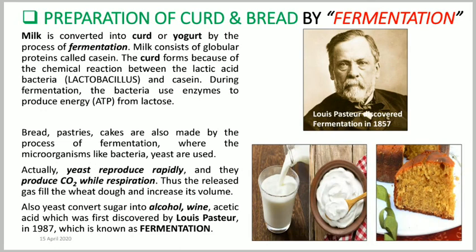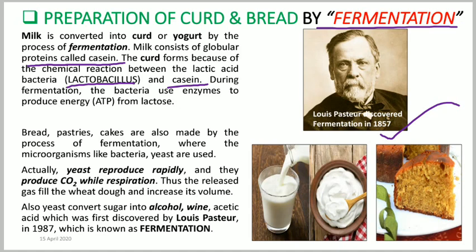How do bacteria help in the preparation of curd and bread? That process is known as fermentation. Louis Pasteur discovered fermentation in 1857. Milk contains a globular protein called casein, and curd is formed by a chemical reaction between lactic acid bacteria — lactobacillus — and casein. During fermentation, bacteria use enzymes to produce energy known as ATP (adenosine triphosphate) from lactose. That is how bacteria convert milk into curd.